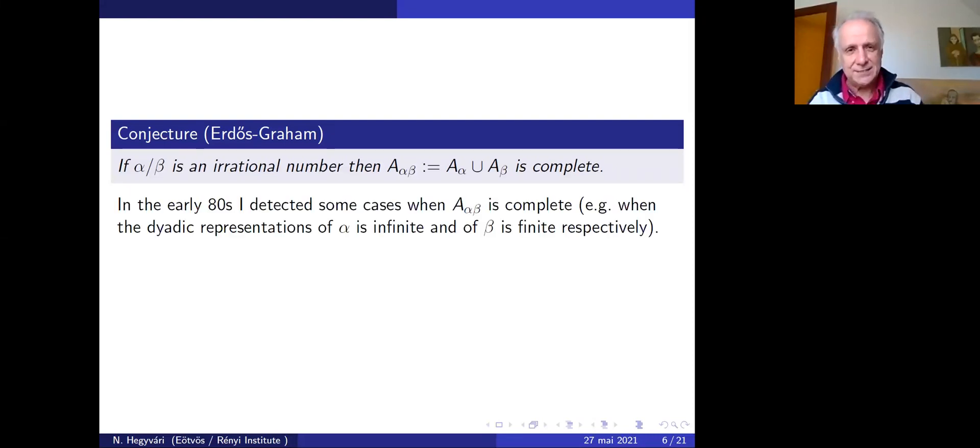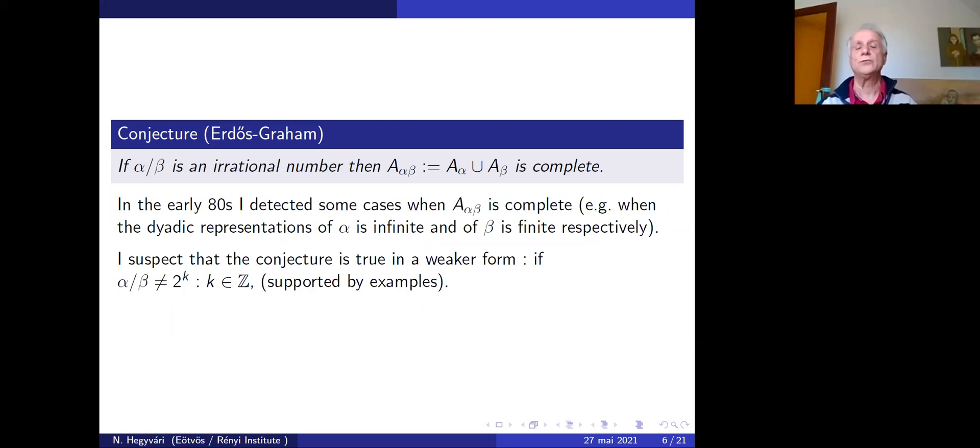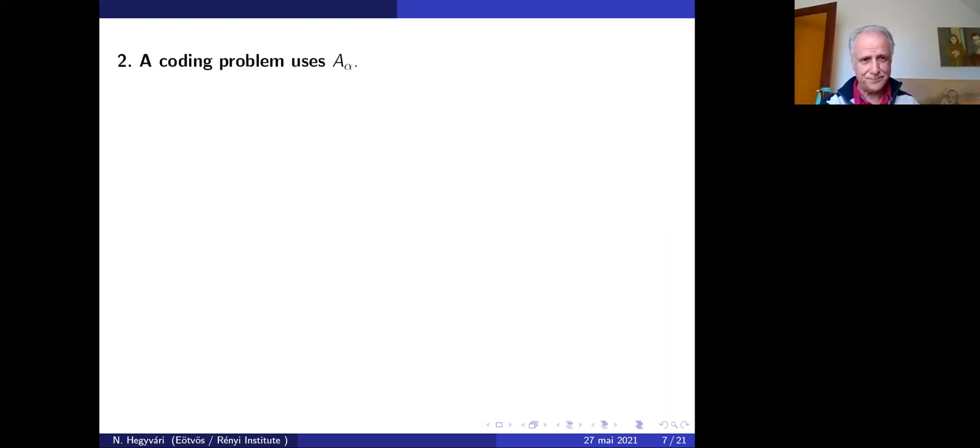In the early 1980s, I detected some cases when A_α,β is complete. One example: when the dyadic representation of α is infinite and the dyadic representation of β is finite, the set is complete. I suspect the converse is true in a weaker form when the ratio avoids the powers of two.